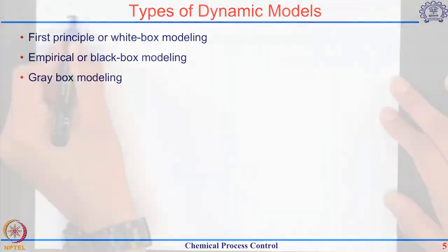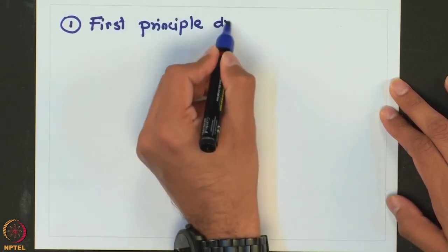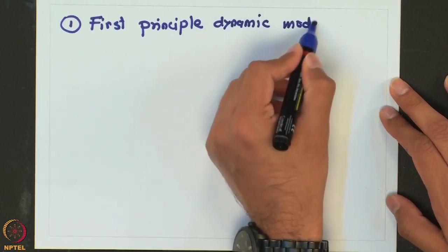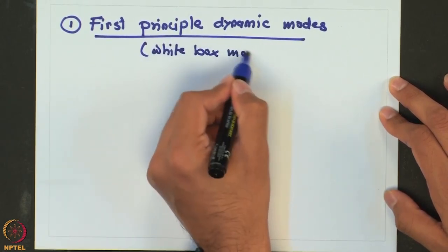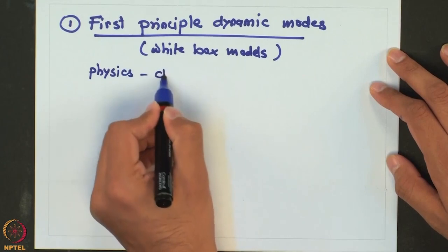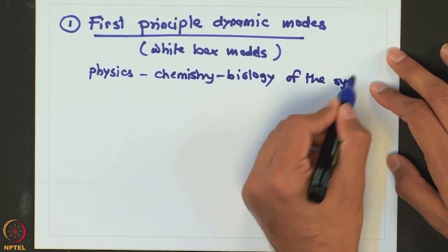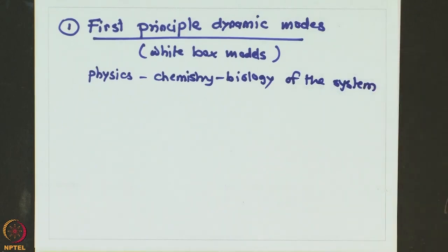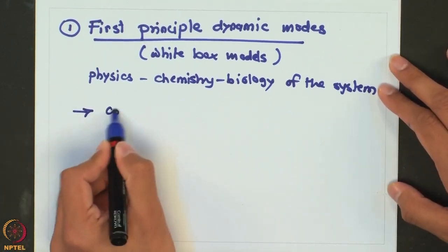The first type of models are known as first principle models — we will also call them as white box models. As the name suggests, they are based on the first principles, or principles of physics, chemistry, and biology. You can also call them as fundamental models based on the actual theory of the system, and they deal with conservation laws.